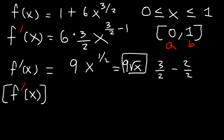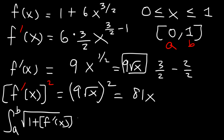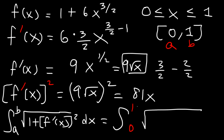Now we're going to square the first derivative. 9 squared is 81, and the square root of x times the square root of x is simply x. So now let's use the formula. In this problem, a is equal to 0 and b is 1. Let's replace f prime of x squared with 81x. So this becomes the integration from 0 to 1 of the square root of 1 plus 81x dx.